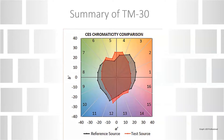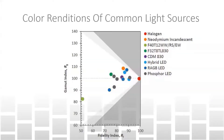Here's a great example graphing fidelity on the x-axis and gamut on the y-axis, comparing multiple light source types. In the center-right you can see halogen at 100 fidelity and 100 gamut. Then fluorescence and different types of LEDs are shown with where they stack up when it comes to gamut and fidelity. It's a great tool to visually represent the differences between those light sources.